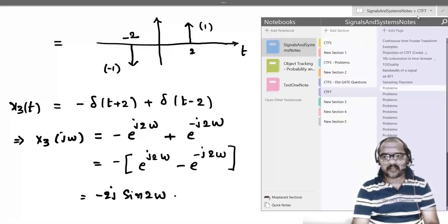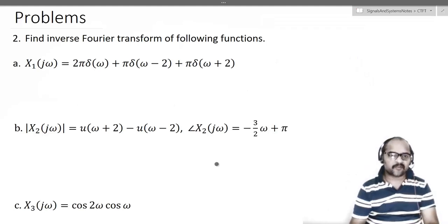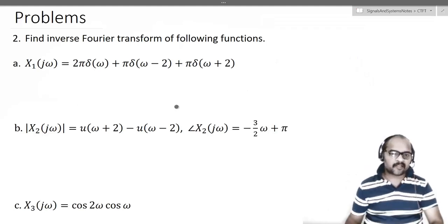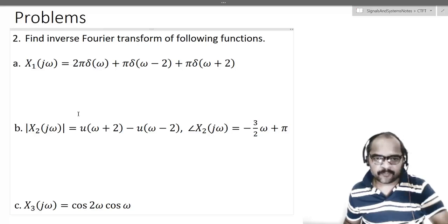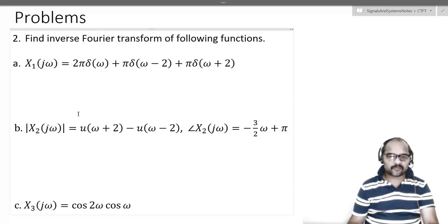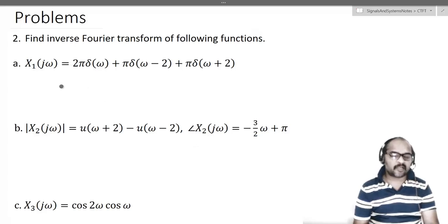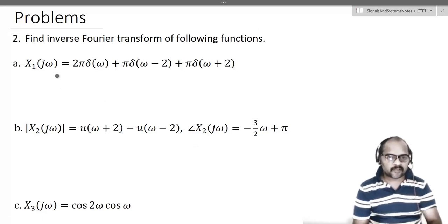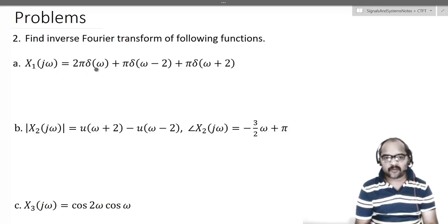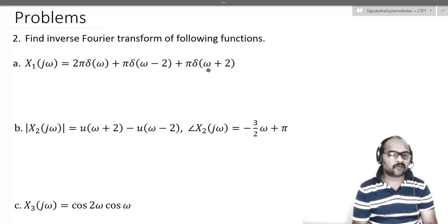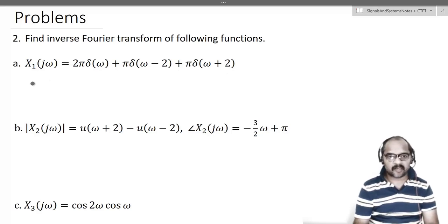Next, let us move to the next problem. It says find the inverse Fourier transform of this signal. The first function x1 of jω is given to be 2π·δ(ω) + π·δ(ω−2) + π·δ(ω+2).